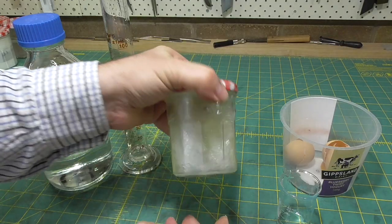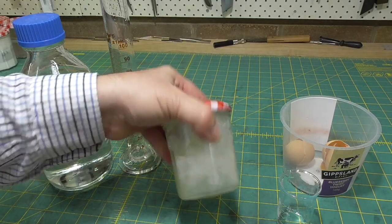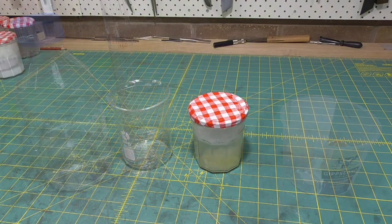I just mix the egg white with the water, give it a bit of a shake, but I don't want to turn it into meringue. And then I let it sit overnight.